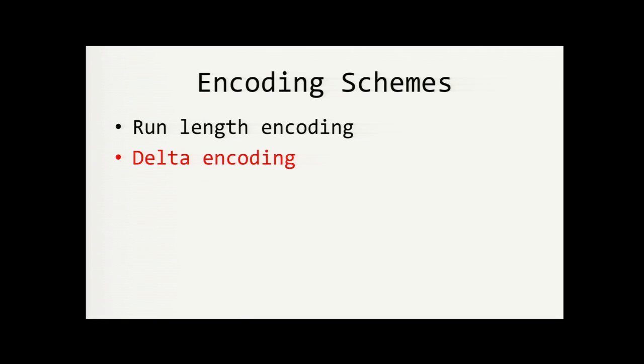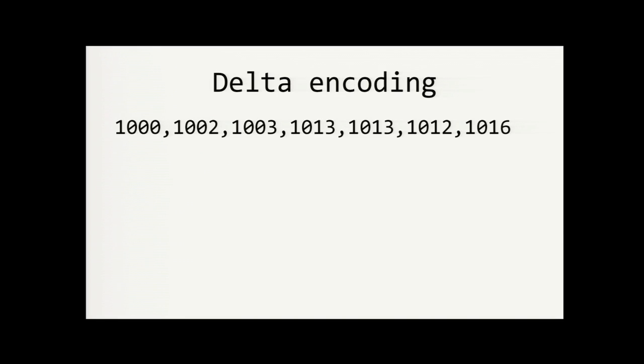Another basic encoding scheme is called delta encoding, and it computes the relative differences between sequential data values. So, this sequence of numbers can be efficiently represented by delta encoding. The first value is just preserved as is, and then for each subsequent value, we calculate the difference. So, 1,002 is 1,000 plus 2. 1,003 plus 1, plus 10, and there's no change from the previous value, so plus 0, minus 1, and plus 4.